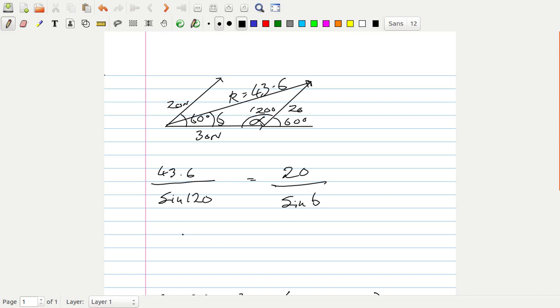And if we just change this round, rearrange this equation, we can say that sine beta is equal to 20 times the sine of 120, divided by 43.6.